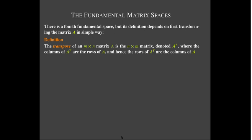So that tells us it's A transpose. The columns of A transpose will come from the rows of A, and the rows of A transpose are the columns of A.